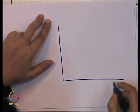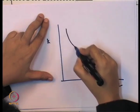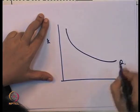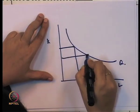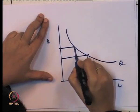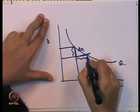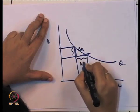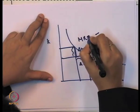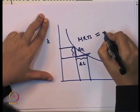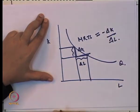In the graph, we take L on the x-axis and K on the y-axis. This is our isoquant and the marginal rate of technical substitution is nothing but the slope — that is the change in K over the change in L. So marginal rate of technical substitution is equal to minus ΔK/ΔL.